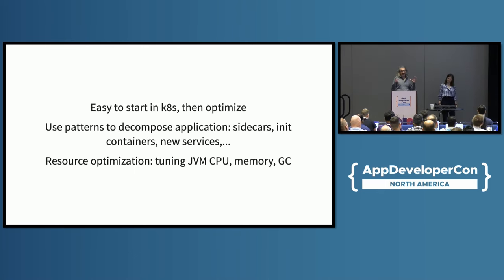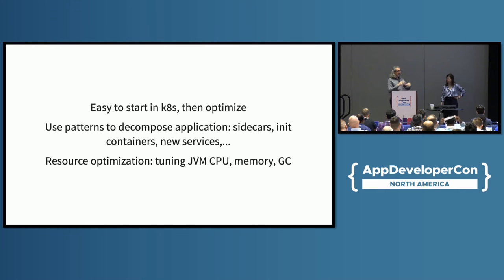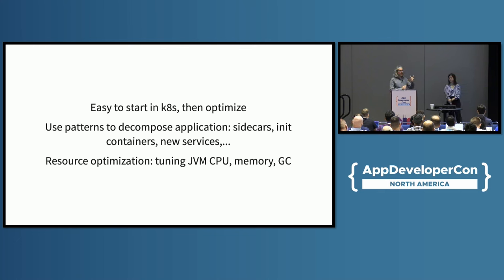To wrap up from our experience: it's very easy to start on Kubernetes and then optimize. You can start with a lift and shift — bring your monolith or whatever application you have running somewhere else, bring it to Kubernetes, and then optimize with patterns like sidecars, or start decomposing into microservices as you need it. It's also important to consider resource optimization: how do you tune the JVM if you're doing Java, how do you set CPU request limits, memory, and the garbage collector — all things you can do afterwards.